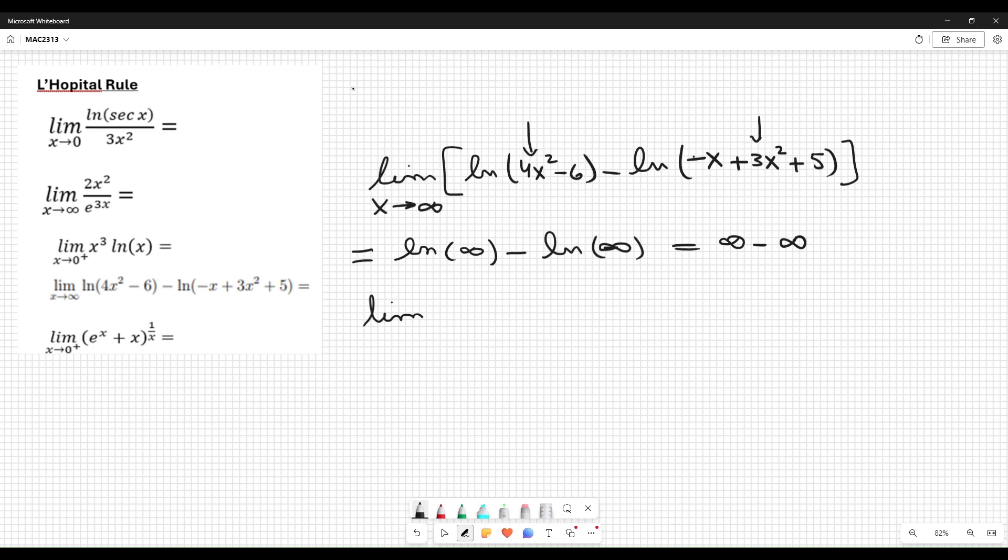You apply the property for logarithm. A subtraction of logarithms is logarithm of the top part, 4x squared minus 6, and logarithm of the bottom part, 3x squared plus x plus 5. We can apply L'Hôpital by interchanging limit inside, logarithm outside.